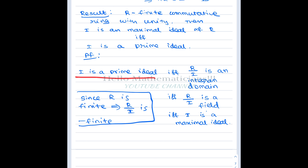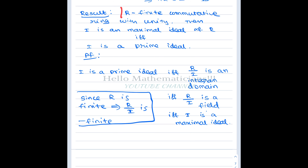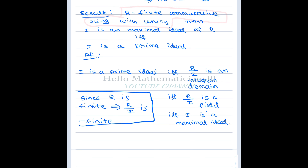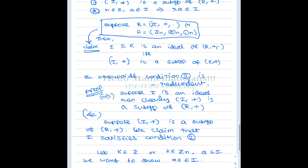So using the finiteness of R, we get: I is a prime ideal if and only if I is a maximal ideal, provided R is a finite commutative ring with unity. I suppose this may also hold in any finite ring with unity — I'm not entirely sure how much commutativity is needed.